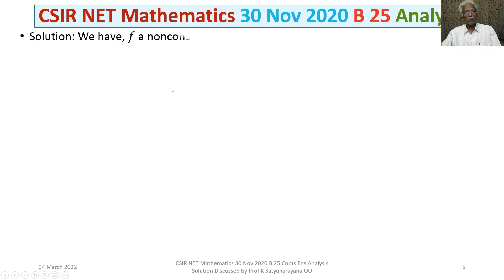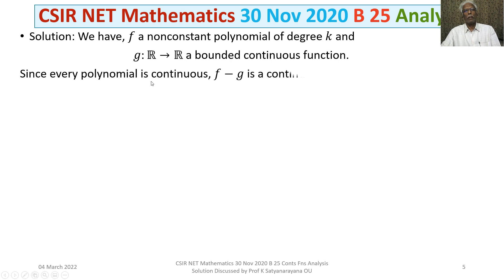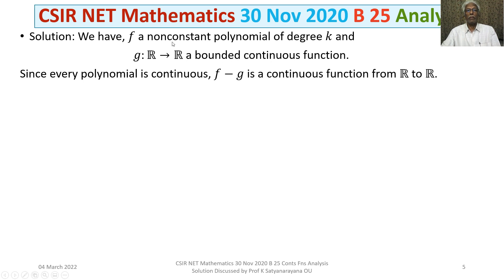We will now discuss the solution of the problem in detail. We are given F, a non-constant polynomial of degree K, and a function G from R to R that is bounded and continuous. We know every polynomial is a continuous function, so F is continuous and G is continuous. Therefore F minus G is also a continuous function from R to R. Note that F is a non-constant polynomial of degree K.